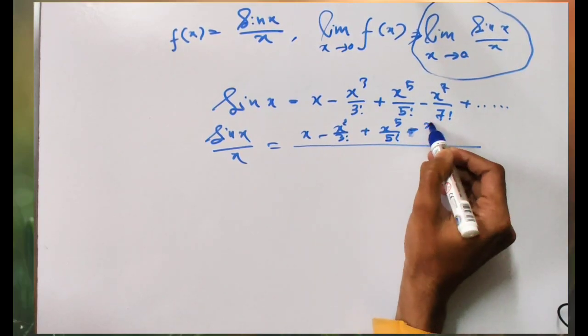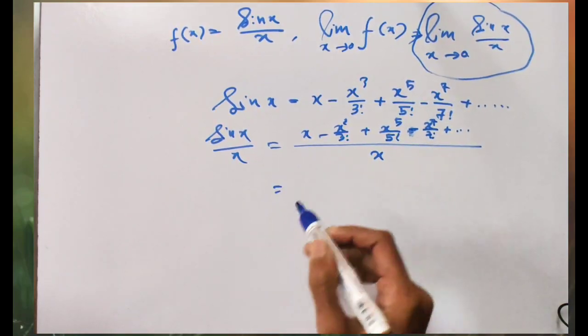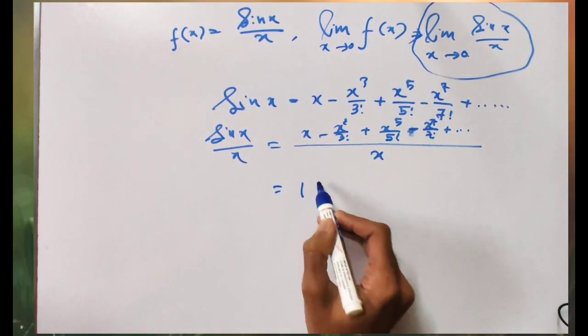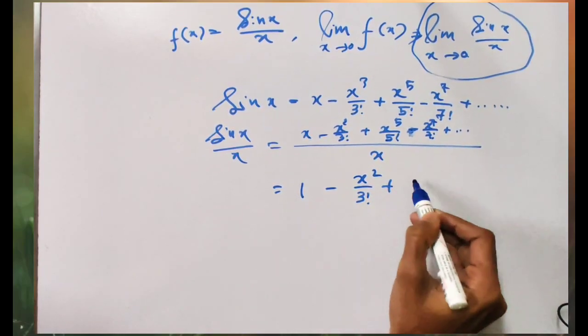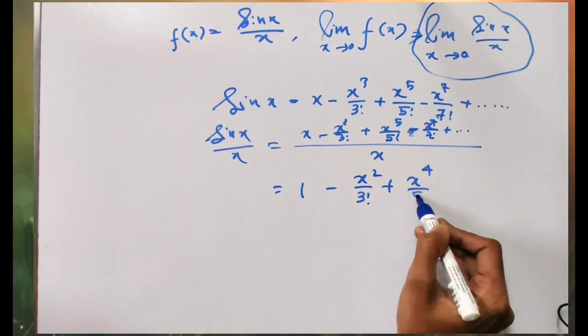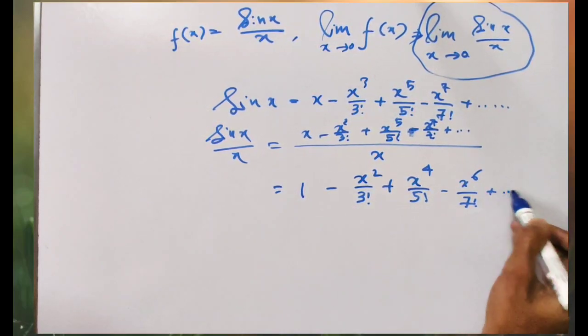If you divide this, the result is 1 - x²/3! + x⁴/5! - x⁶/7! and so on.